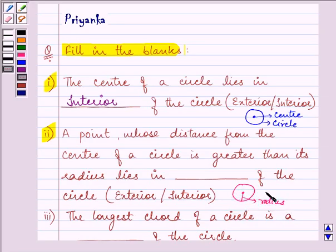So any point whose distance is greater than this distance will obviously lie in the exterior of this circle. So here the answer is exterior.